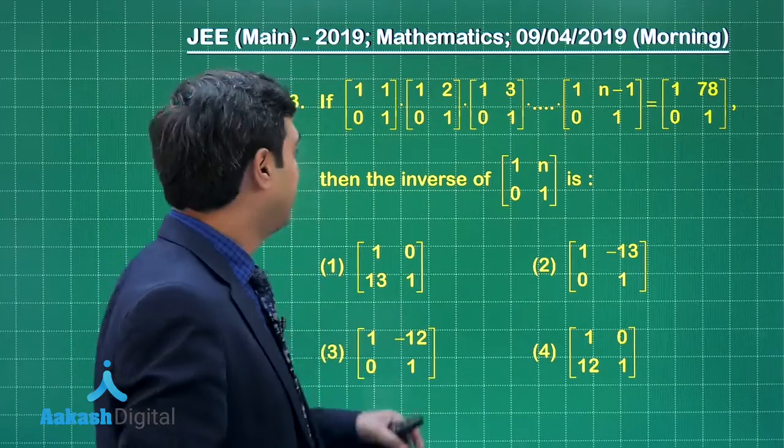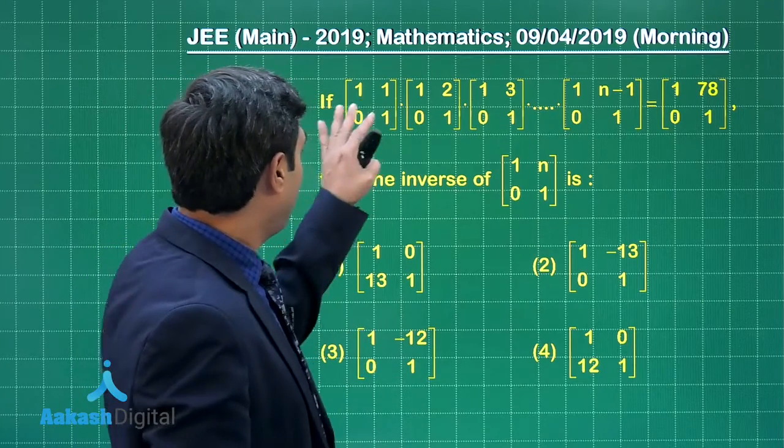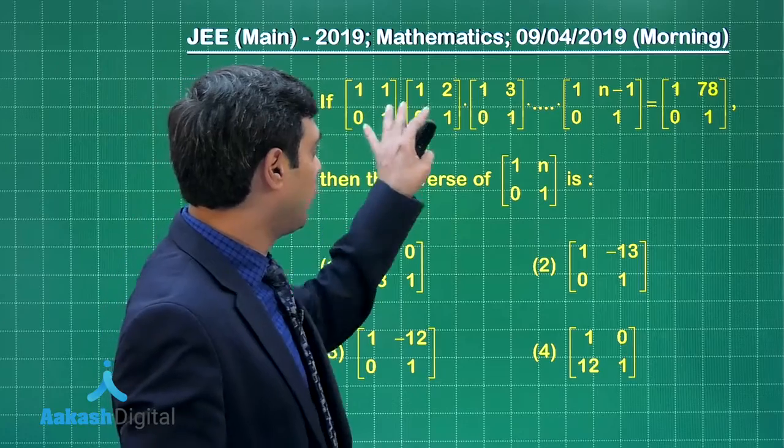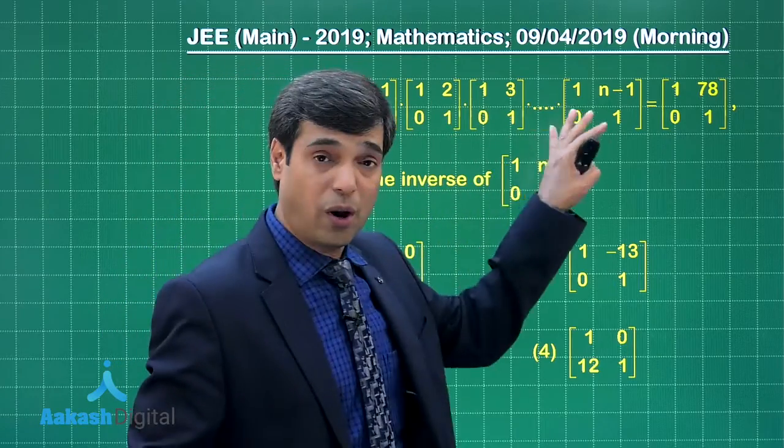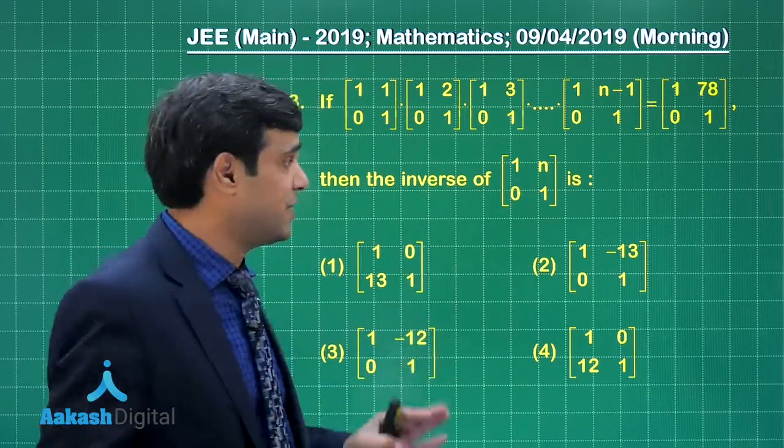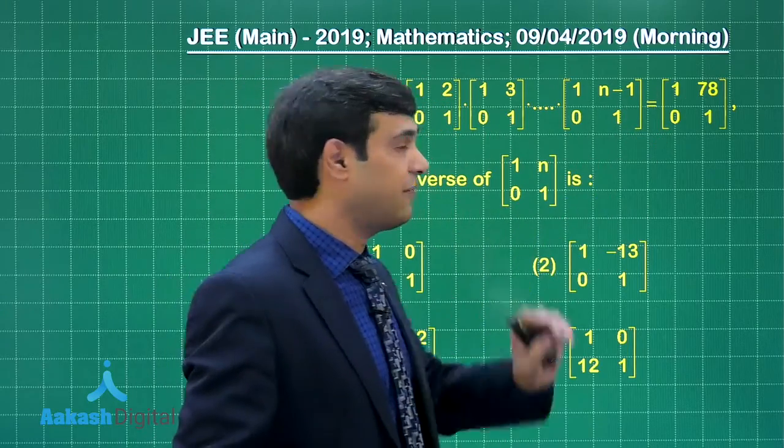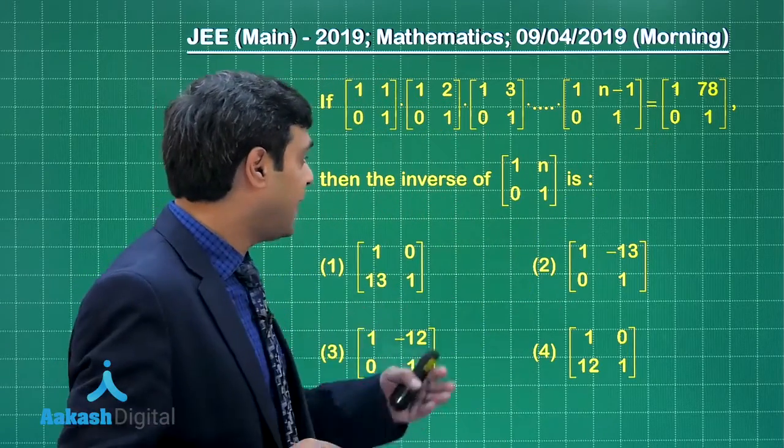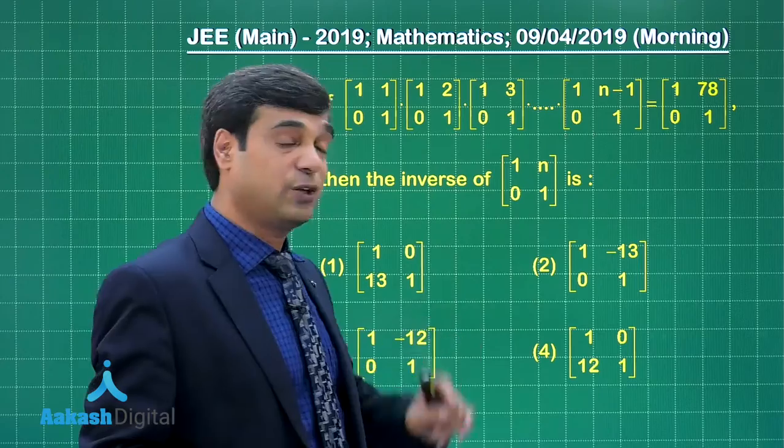Let's take question number 13. If the product of matrices [1 1; 0 1], [1 2; 0 1], [1 3; 0 1], and so on equals [1 78; 0 1], then find the inverse of [1 n; 0 1].